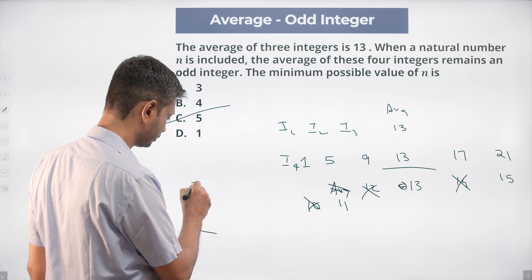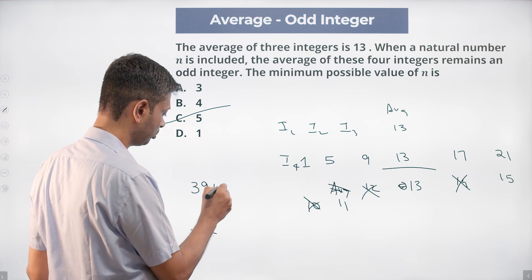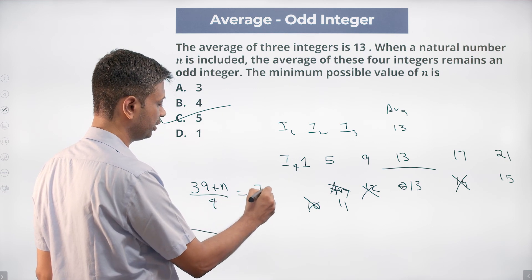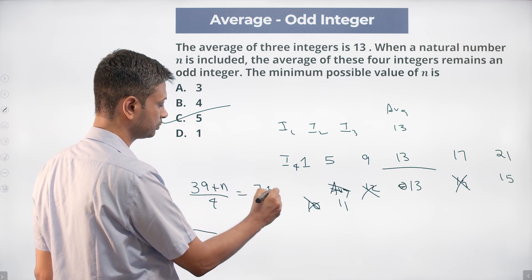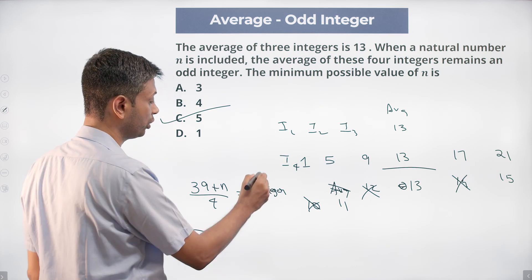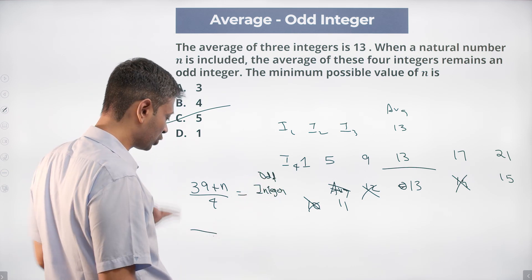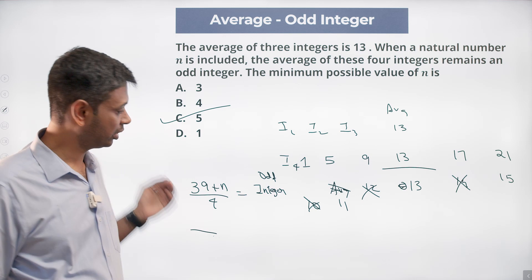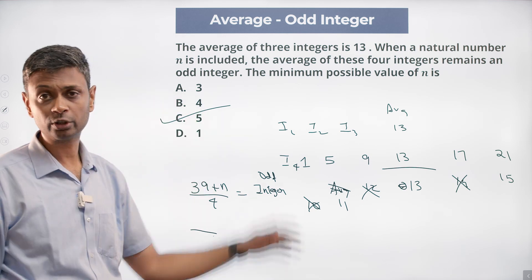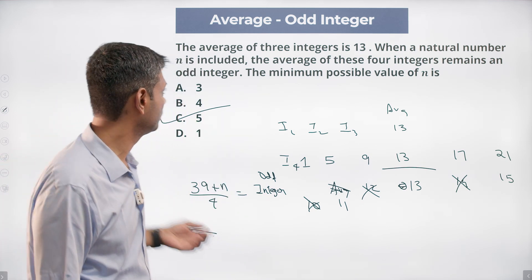To verify: (39 + n) / 4 must equal an odd integer. Trying n=1: (39+1)/4 = 10 — doesn't work, it's even. Trying n=5: (39+5)/4 = 11 — that works, it's odd. So the minimum possible value of n is 5. That's all we are doing, nothing more.